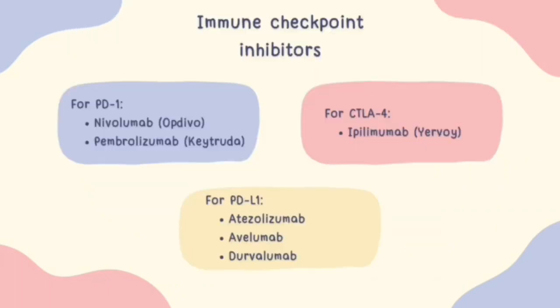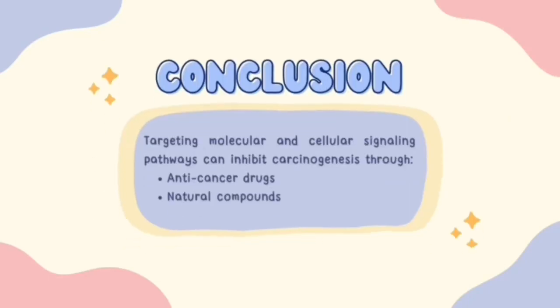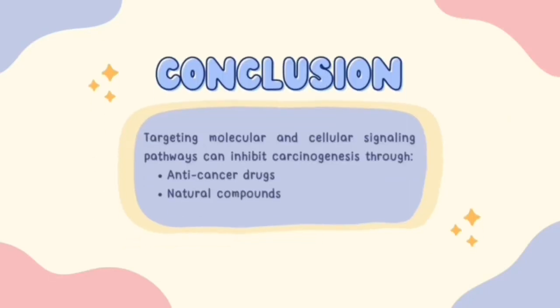T-cells receive many different signals from cancer cells. Therefore, various types of checkpoint inhibitors can be developed depending on the type and stage of cancer. In conclusion, targeting molecular and cellular signaling pathways is a promising approach to inhibit carcinogenesis. Small molecule targeted anti-cancer drugs and natural compounds are two examples of this approach. However, more research is needed to overcome the challenges faced by these drugs and compounds. With that, we would like to thank you for your time and attention.